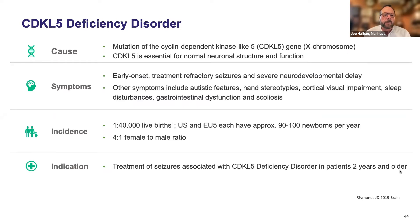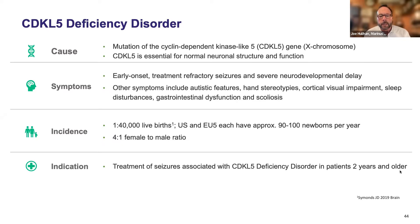Other symptoms include autistic features and hand stereotypies — it was initially considered a variant of Rett syndrome. Patients also have cortical visual impairment and multiple other neurologic and systemic disabilities. It occurs in about 1 in 40,000 live births; we estimate 2,000 patients in the U.S. and another 2,000 in EU5, with a four-to-one female-to-male ratio.